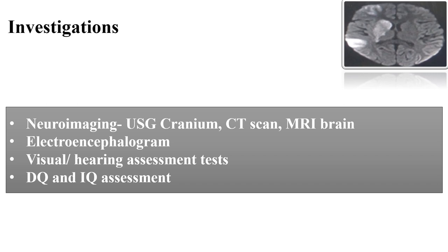Investigation for cerebral palsy: there is no specific test to diagnose CP. We plan investigations to rule out progressive disorders of the CNS such as degenerative diseases, metabolic and genetic disorders, and malignancy. Then investigations are planned to find the etiology: neuroimaging — USG cranium, CT scan, MRI brain — EEG for seizures, and assessment of vision, hearing, and developmental and intelligence quotient.